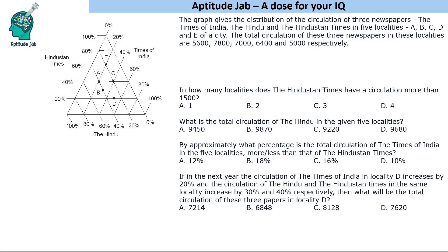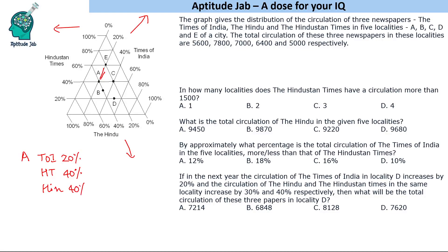Let's understand how to read this graph for locality A. There are three sets of parallel lines going in three different directions. If you draw a parallel line from point A in the first direction, it points to 20%, so Times of India for locality A is 20%. Similarly, Hindustan Times is 40% and Hindu is 40%. The total comes to 100%, so if you know two values, you get the third.